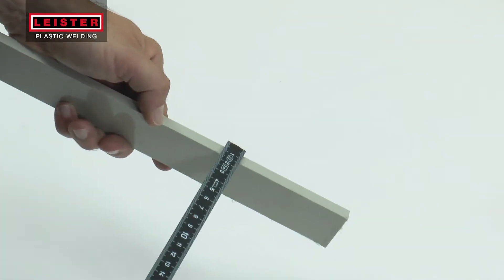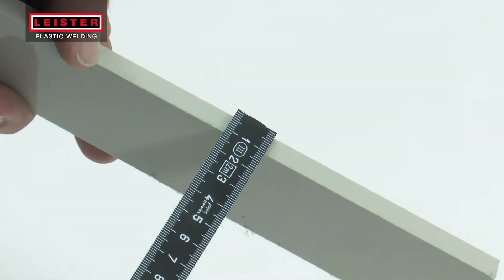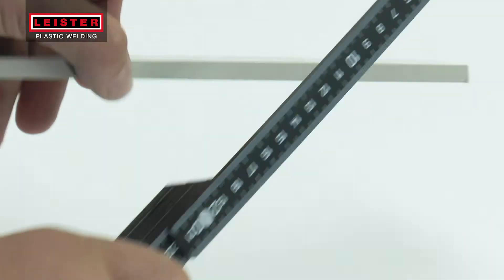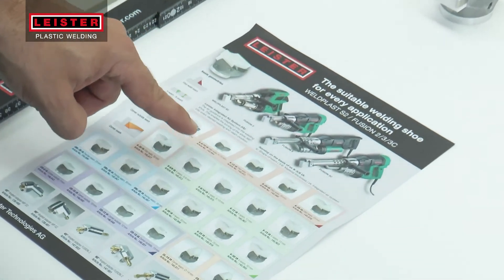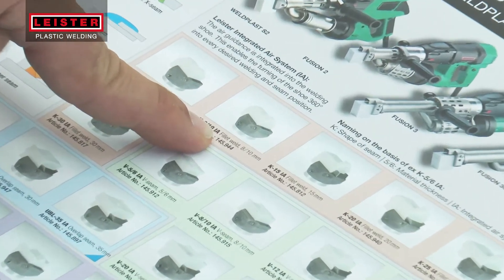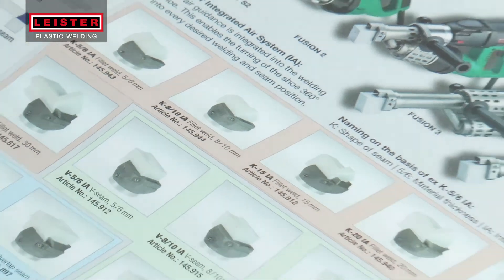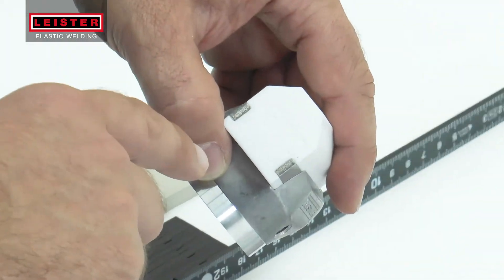Based on the thickness of the material to be welded and the required weld geometry, select the correct welding shoe. The code located on the bottom of the shoe indicates the geometry of the weld and the base material thickness.